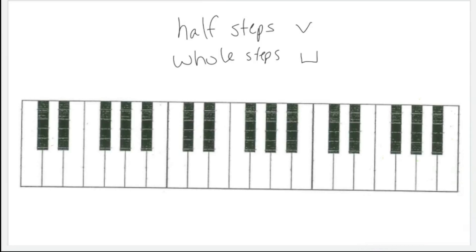A Dorian scale follows the following order of half steps and whole steps: whole step, half step, whole step, whole step, whole step, half step, whole step.